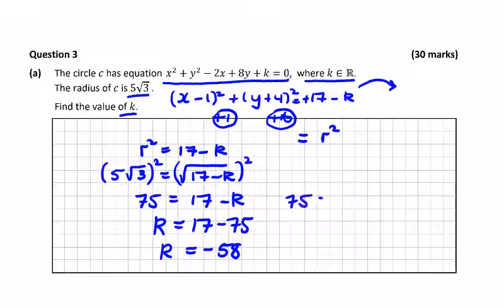I'm curious to do the other value. 75 would be equal to minus 17 plus k, so k for this value will be 75 plus 17, which is 92.